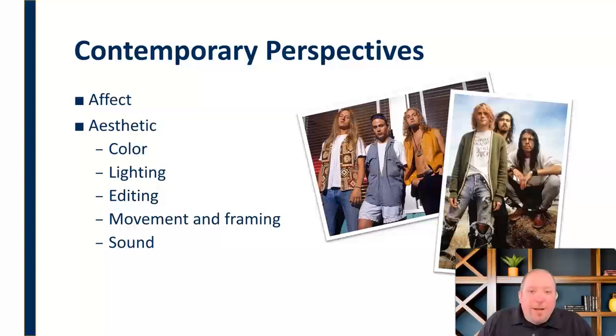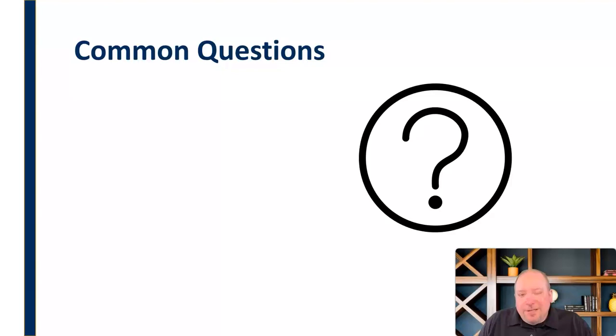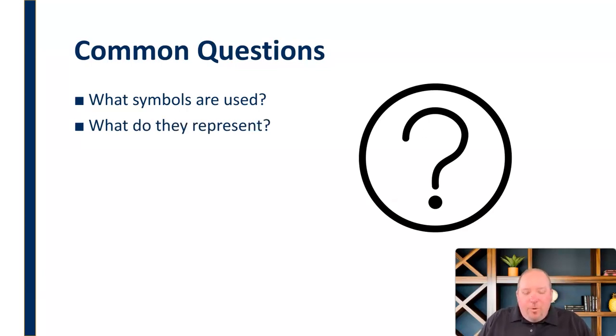So now we have this idea of what is rhetorical analysis. Let's take a look at some of the common questions. Let me just say once again, we're just scratching the surface here. These are some basic questions, some broad questions. There's much more involved in rhetorical analysis than this, but we're just trying to give you an idea here. So common questions include things like what symbols are used? What symbols can you identify as part of this artifact that you're looking at? What are the symbols that are there? What do they represent? What do you think they're intended to do or to be and to represent?